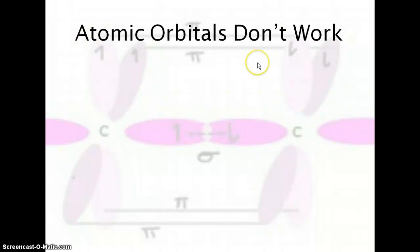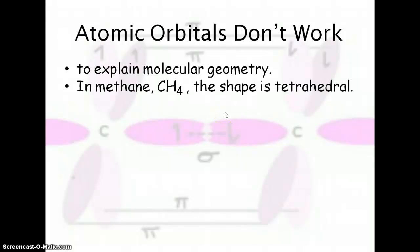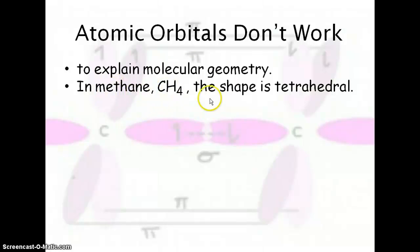So far we know about atomic orbitals, which are s, p, and d. But when we're looking at the shapes that we've learned from VSEPR, they don't explain the molecular geometry. So if we're looking at the example of methane, which is CH4, we know from VSEPR the shape is going to be tetrahedral.